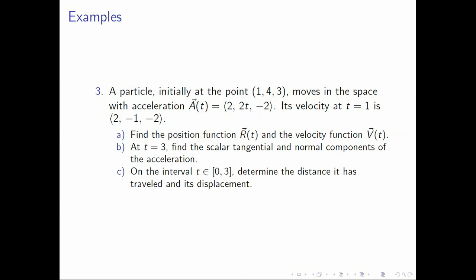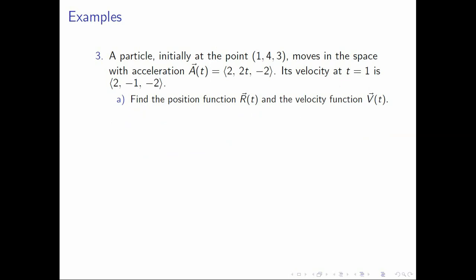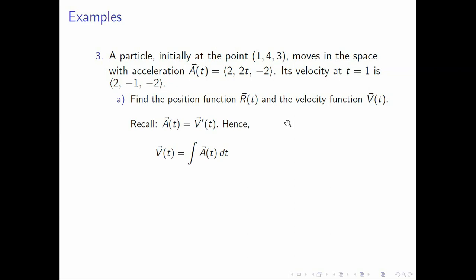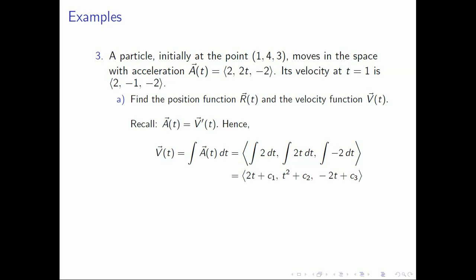Let us start with letter A. We want r(t) and v(t), and we are given a(t). The first thing we can solve is v(t). Recall that a(t) equals v prime of t, so to get v(t) we integrate a(t) component-wise. For the first component we get 2t plus c1. For the second, we get t squared plus c2. And for the third, we get negative 2t plus c3.